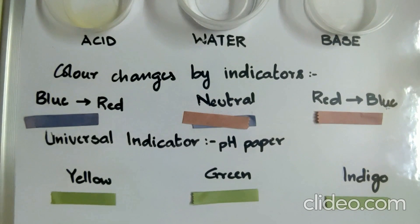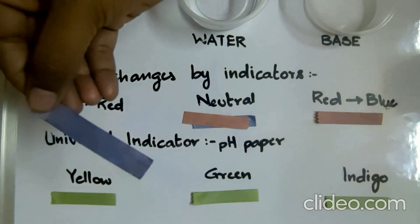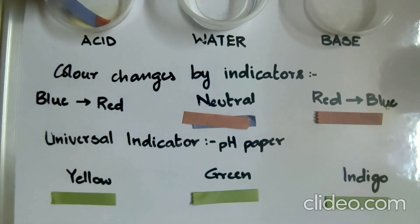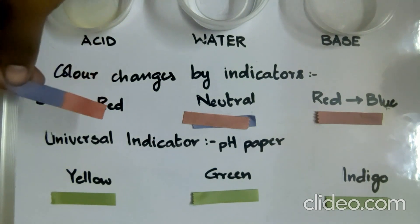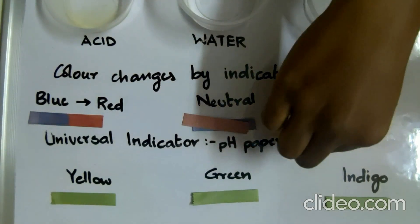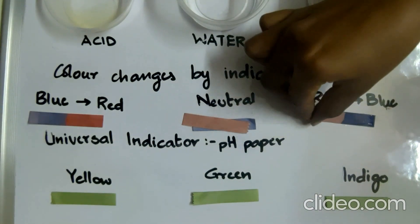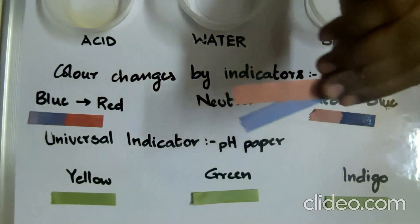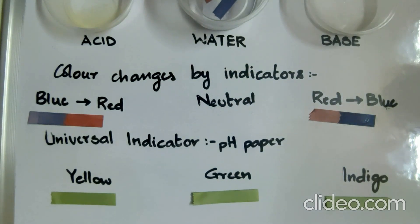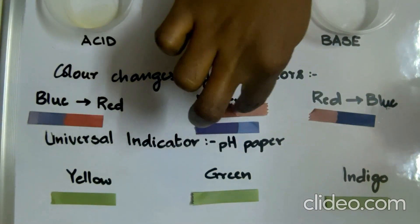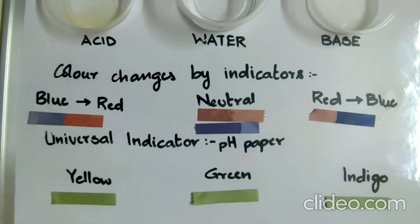Indicators are used to identify acids and bases. Blue litmus, when dipped in acid, changes to red. Red litmus, when dipped in a base, changes to blue. When both red and blue litmus are dipped in water, there is no change in color, which indicates it is neutral. So: acid turns blue litmus red; base turns red litmus blue; in water, both remain unchanged.